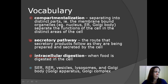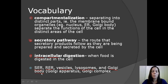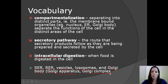And finally, the membrane-bound organelles involved in these processes are the smooth ER, the rough ER, vesicles, lysosomes, and the Golgi body. The Golgi body also has two other names — it can be referred to as the Golgi apparatus or the Golgi complex.